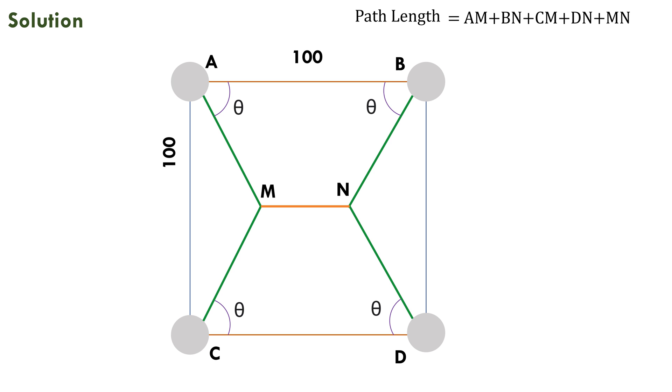Let's extend the line NM to meet AC at P. Let's see triangle PMC. Let's try to find length MN. For this tan(90 minus theta) equals PM by PC. Or cot theta equals PM by PC. Or PM equals PC cot theta.